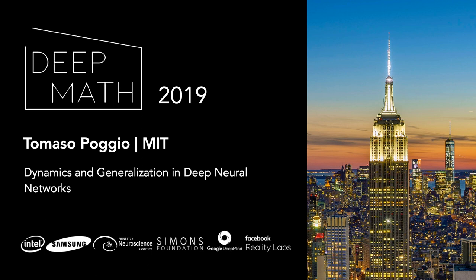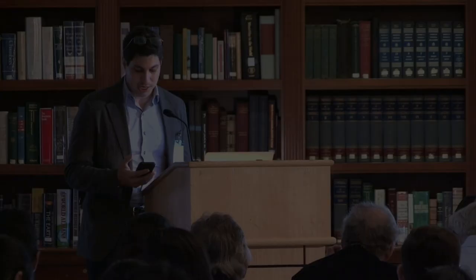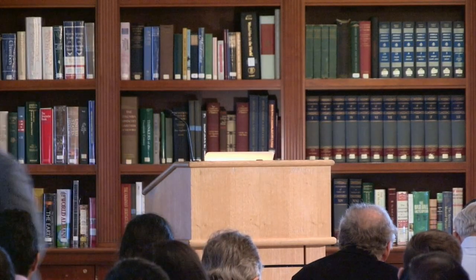To start off, I'm very excited for Tommaso Poggio to be joining us. Tommaso has been contributing to our understanding of this problem for a long time now. He is a Eugene McDermott Professor at the Department of Brain and Cognitive Sciences at MIT, as well as the CSAIL section, and the Director of the Center of Biological and Computational Learning. He's won a number of awards, including the Gabor Award, the Osaka Award, Okawa Award, and the Schwartz Prize, and he'll be telling us about dynamics and generalization in deep neural nets. Thank you.